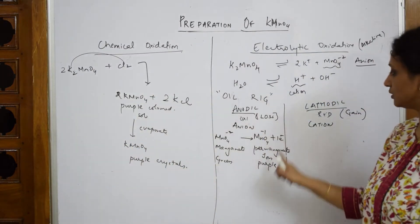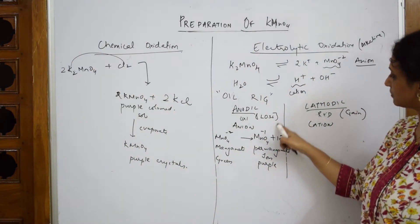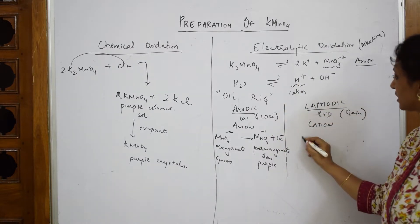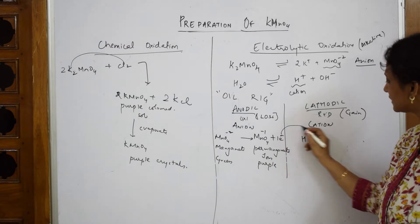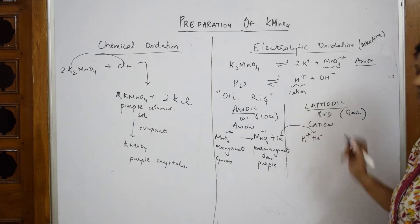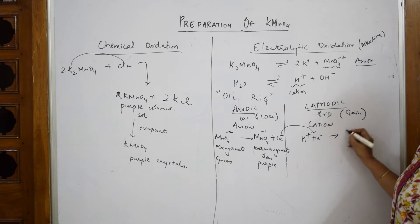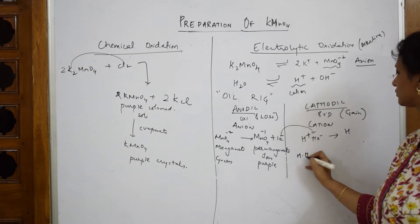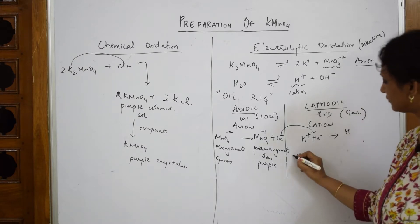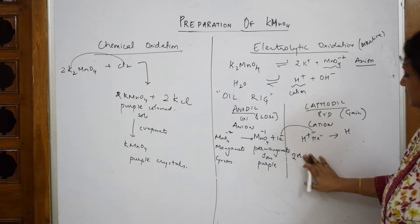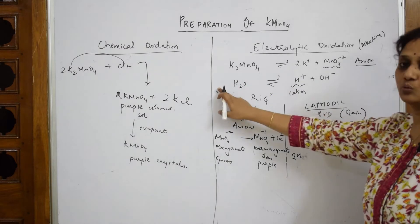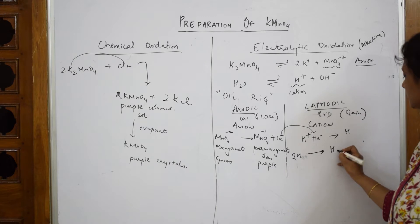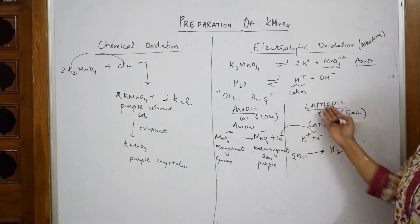One electron is lost at the anode and travels to the cathodic compartment. The cation H⁺ picks up this electron at the cathode. Taking two H⁺ ions, each gaining one electron, they combine to form H2 gas, which evolves out of the cathode.